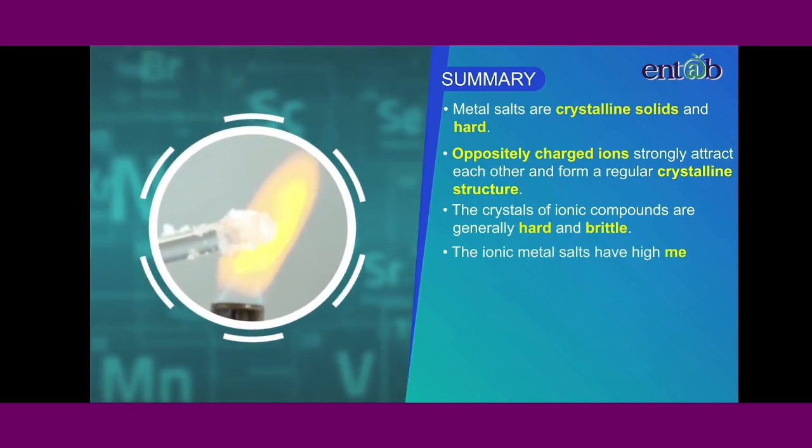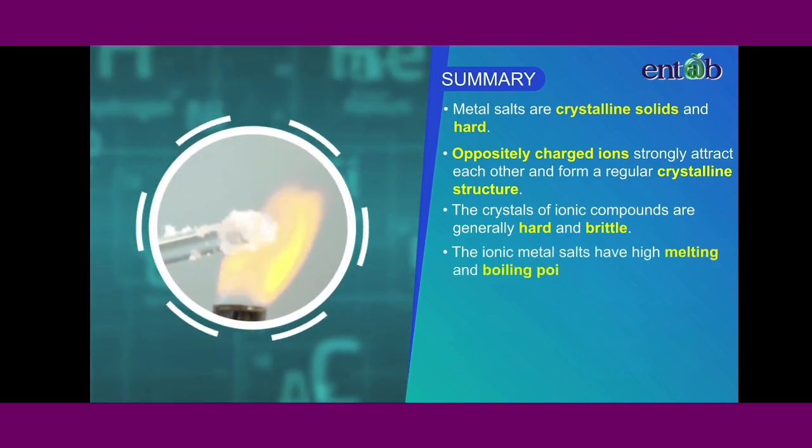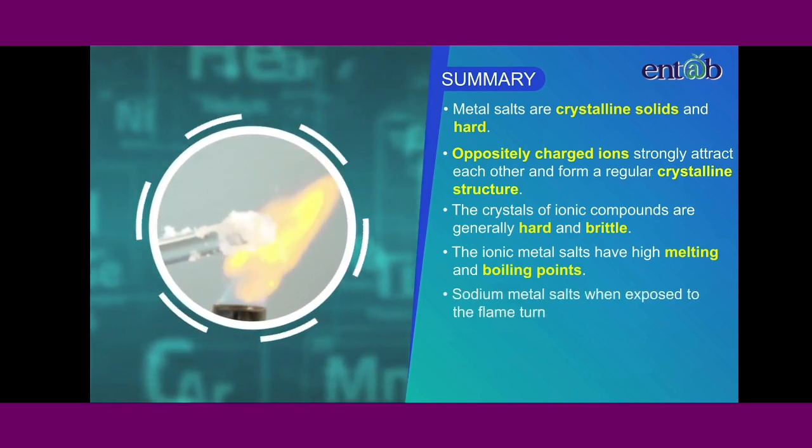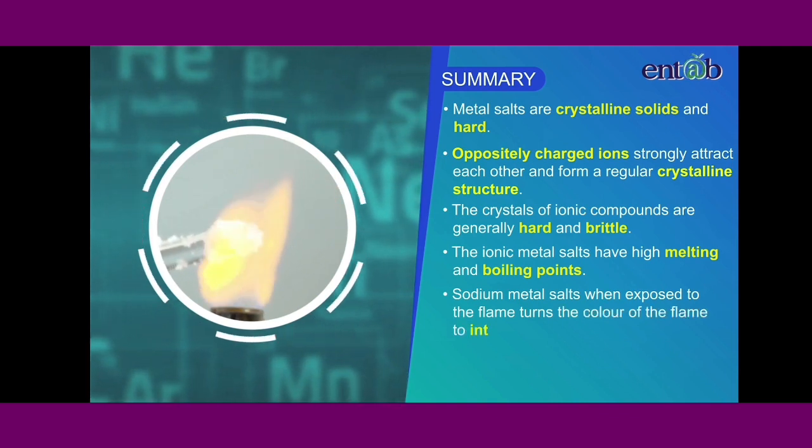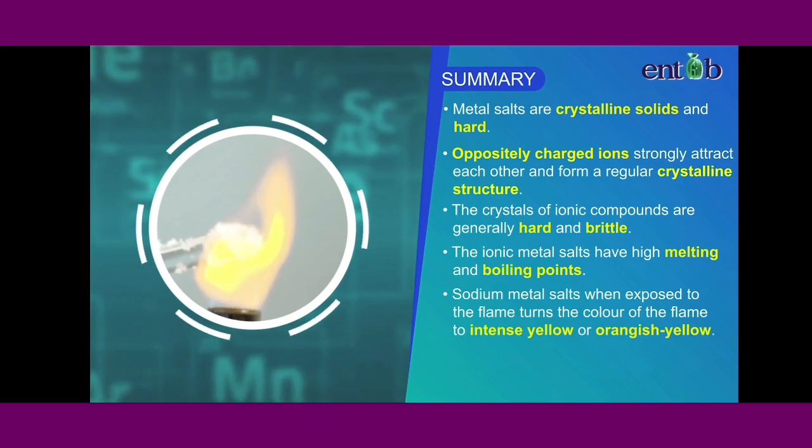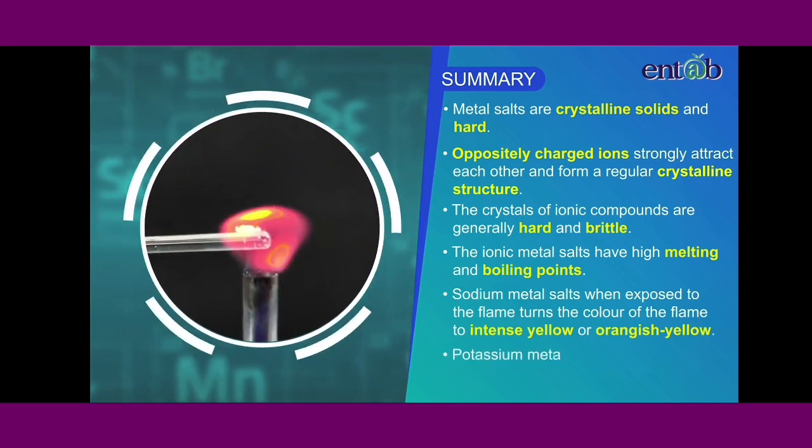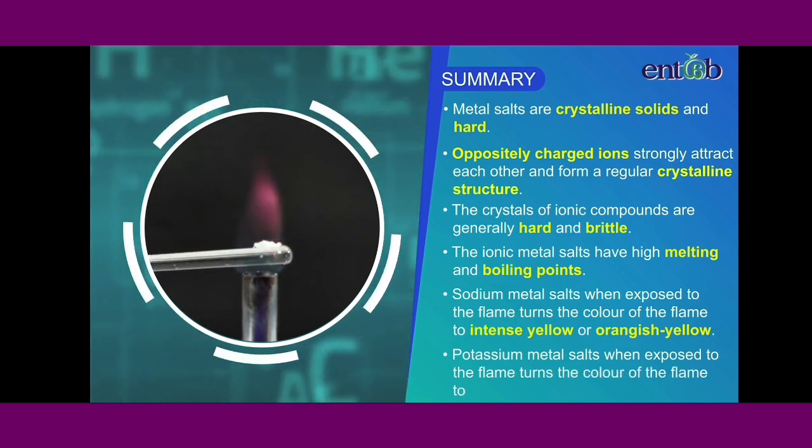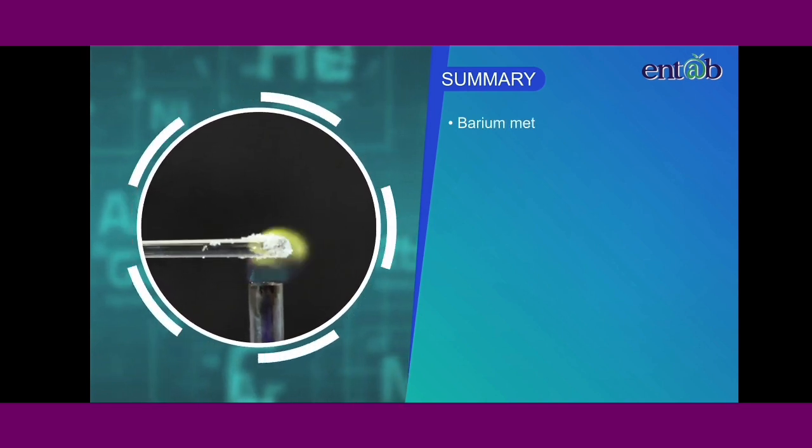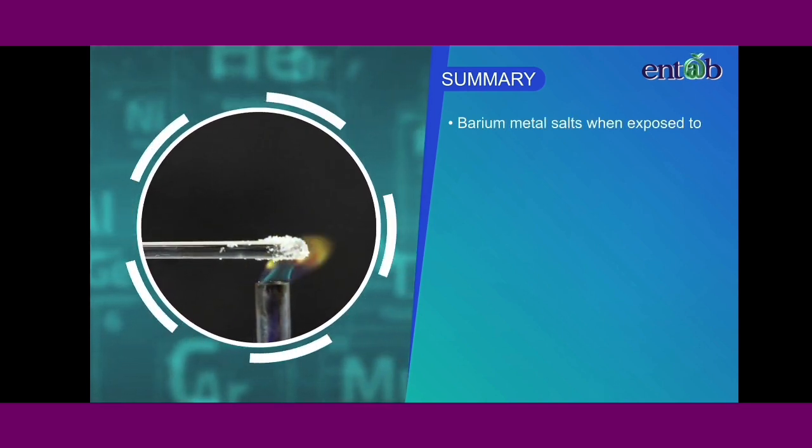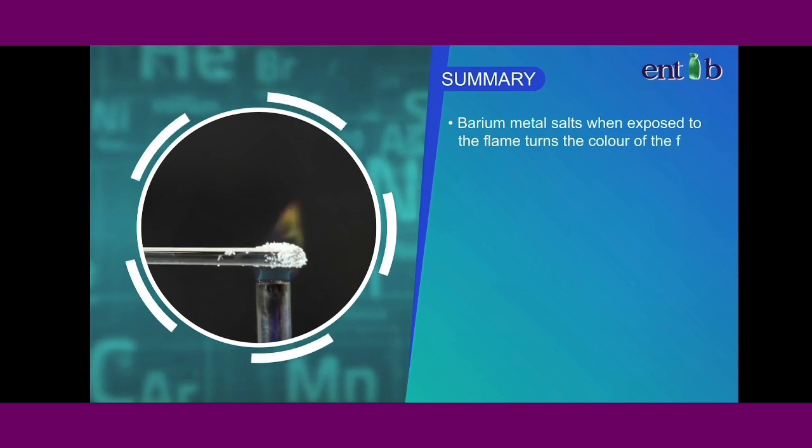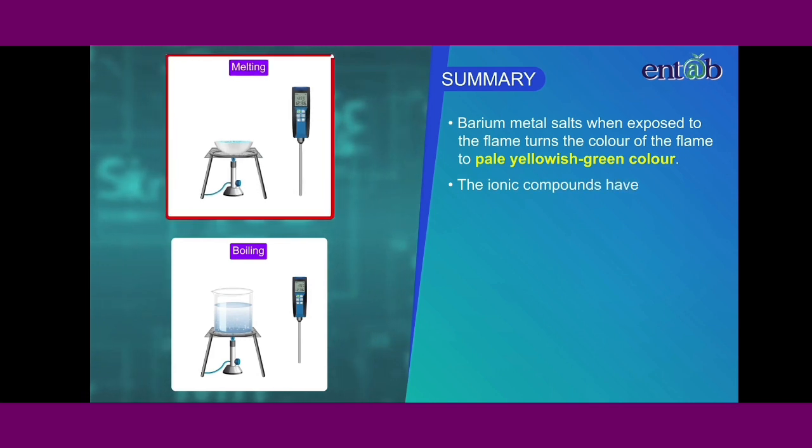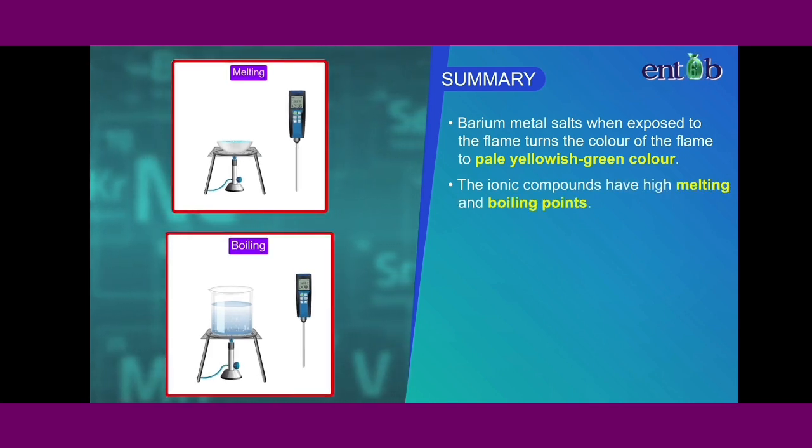The ionic metal salts have high melting and boiling points. Sodium metal salts when exposed to the flame turn the color of the flame to intense yellow or orangish yellow. Potassium metal salts turn the color of the flame to lilac color. Barium metal salts when exposed to the flame turn the color of the flame to pale yellowish green color. The ionic compounds have high melting and boiling points.